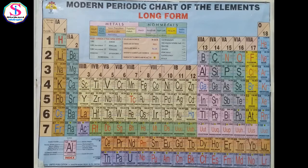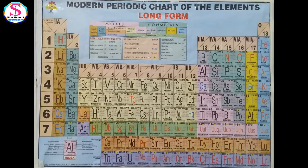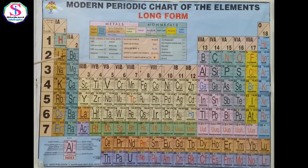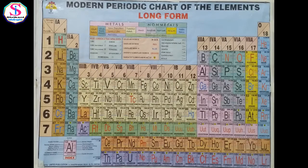The periodic table also consists of 18 groups. Vertical columns are called groups, numbered 1 through 18, with group 18 called the noble gases or inert gases group. Elements present in the same period have the same number of shells, equal to the period number. In a new period, a new shell starts filling.